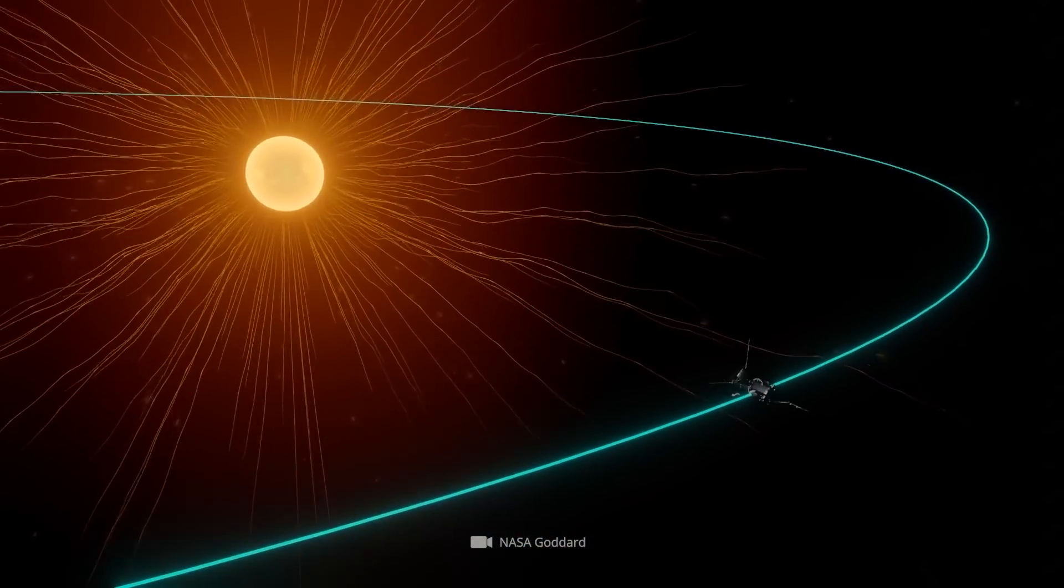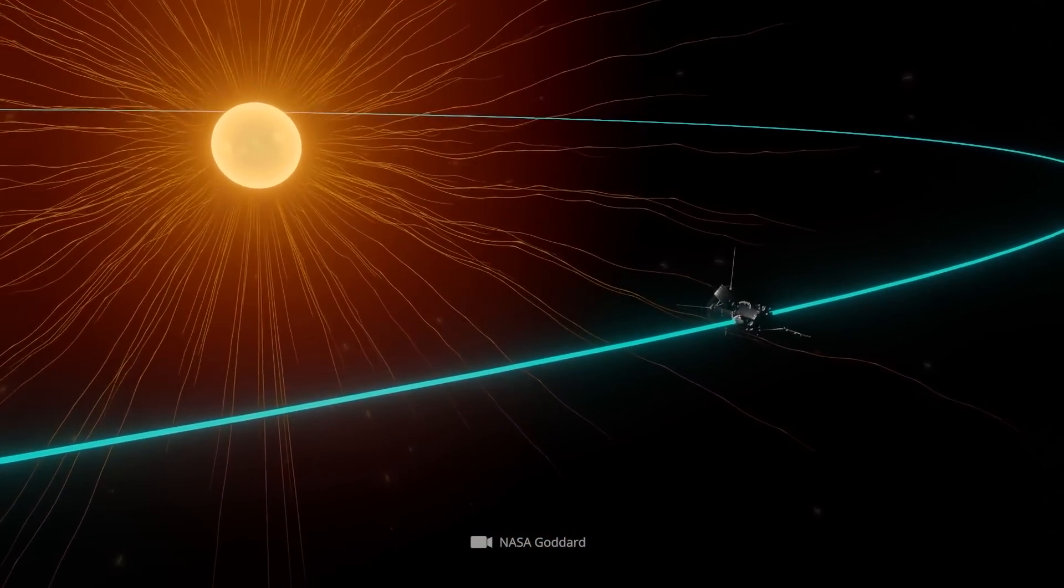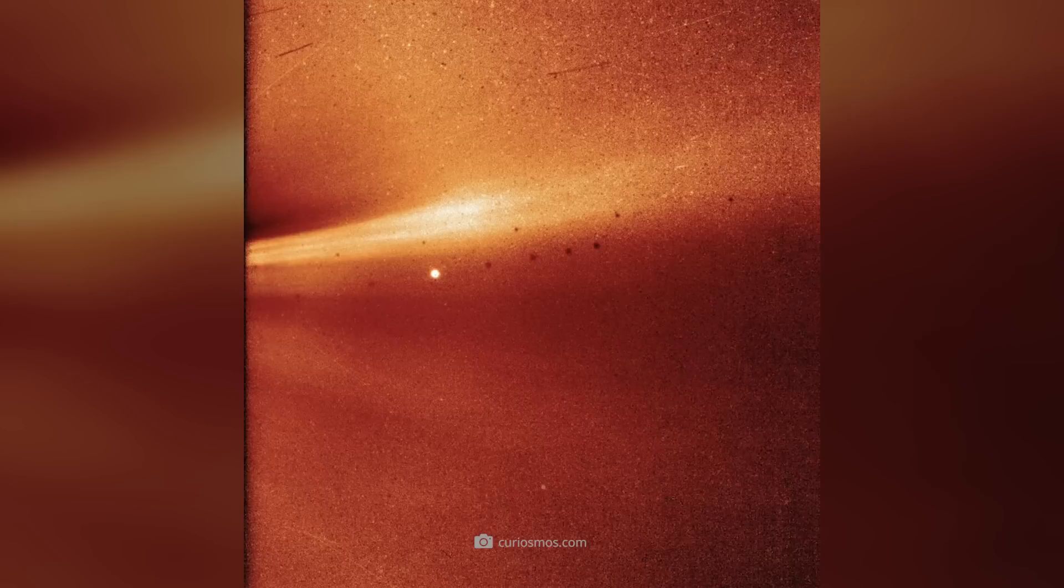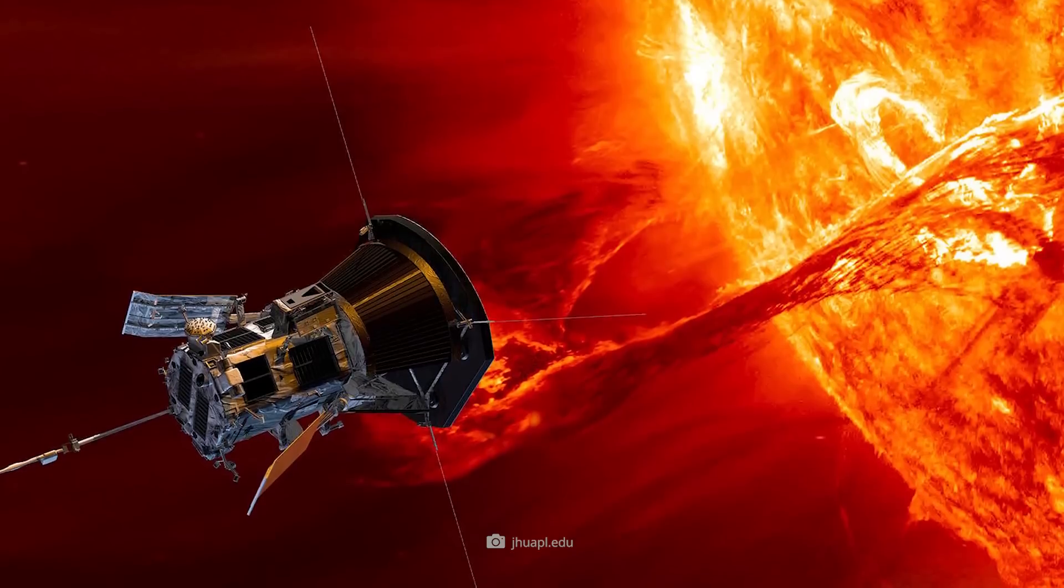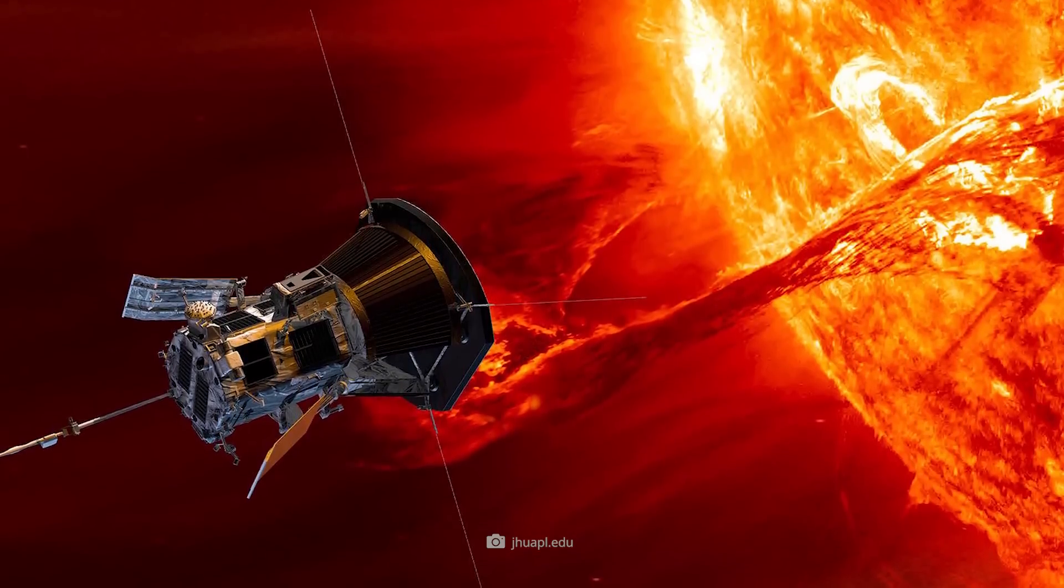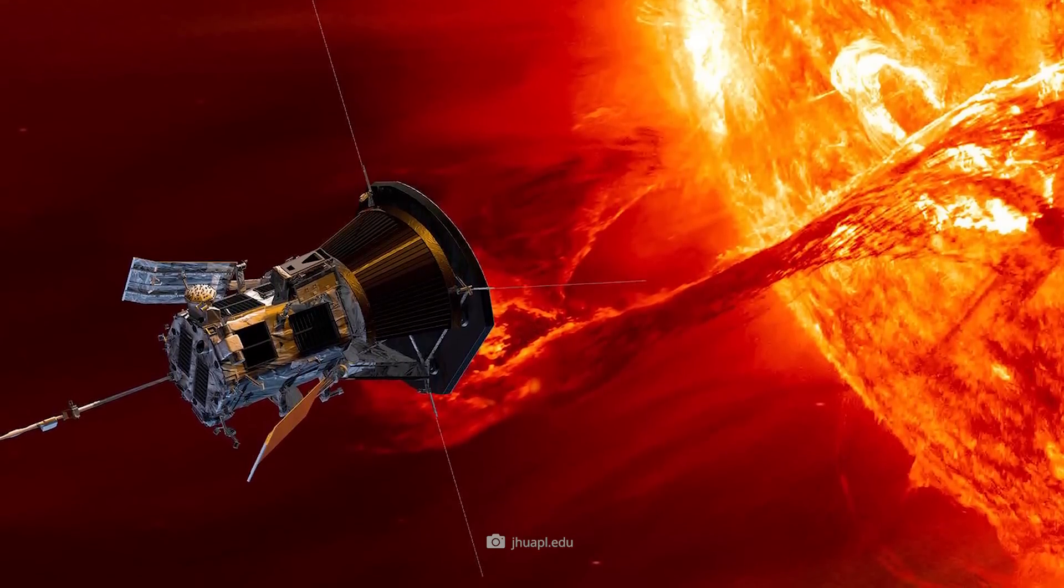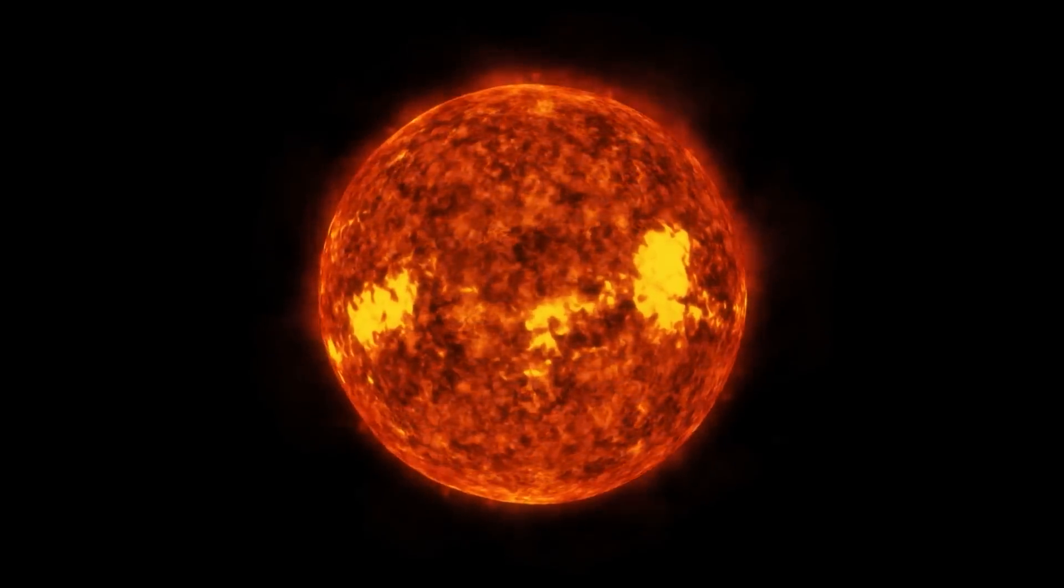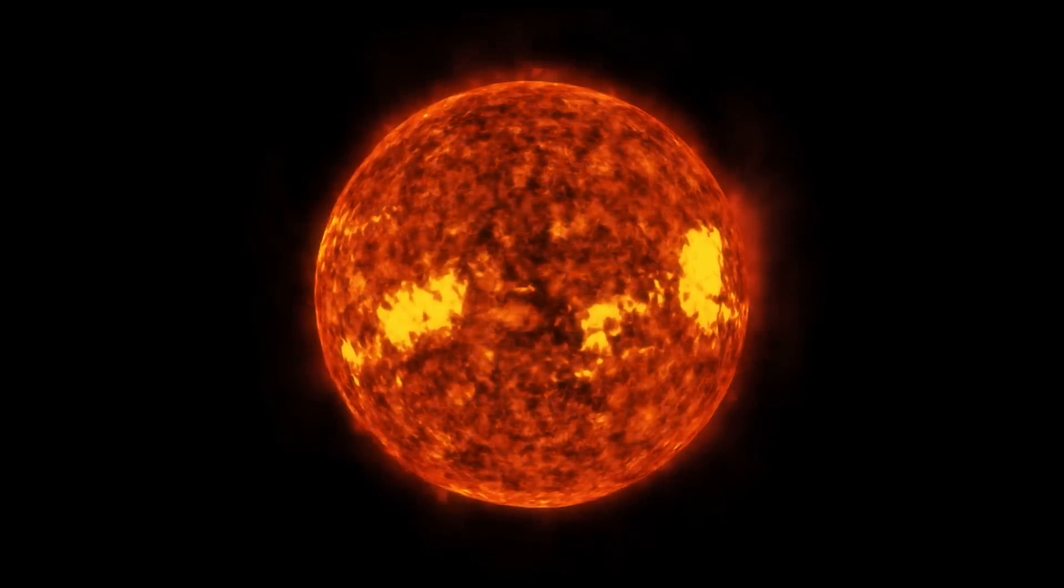The fact that this previously uncharted hurdle had been successfully overcome was evident to the experts from the measurement data on the magnetic field and solar wind and from the camera images. Parker Solar Probe thus entered a coronal world that otherwise only reveals itself during a total solar eclipse. And that three times.